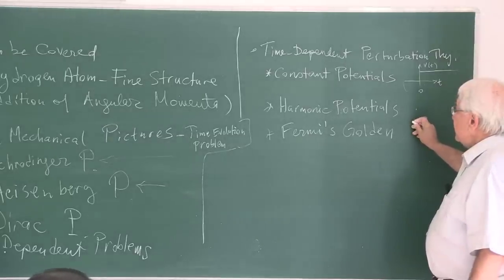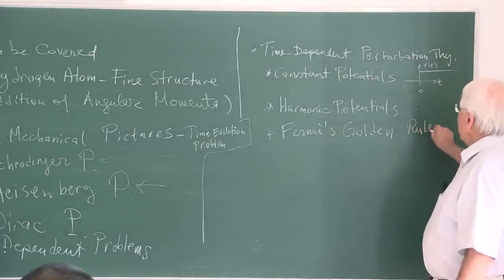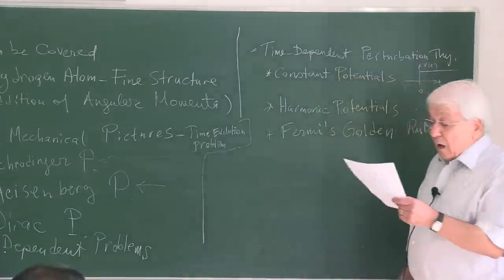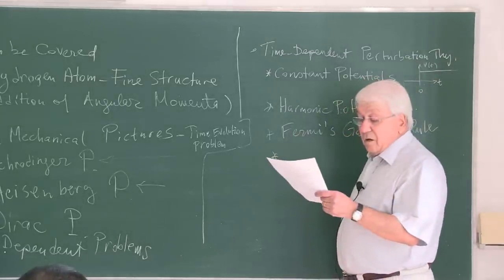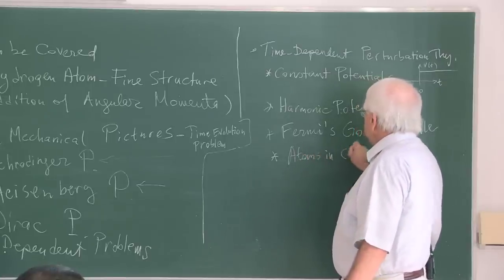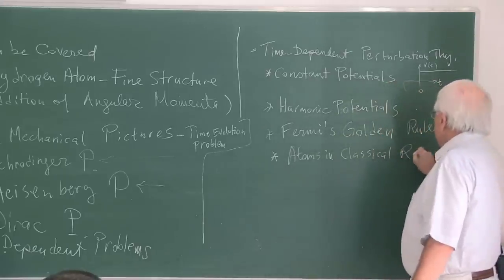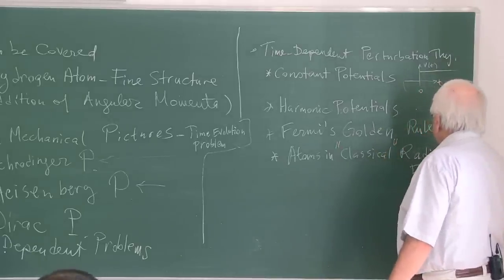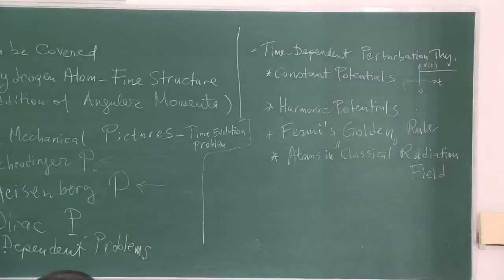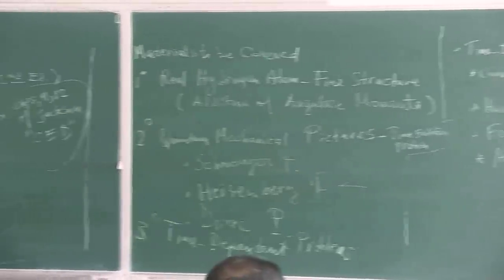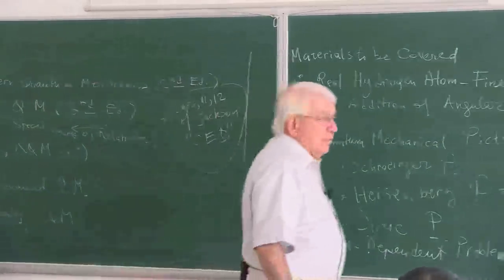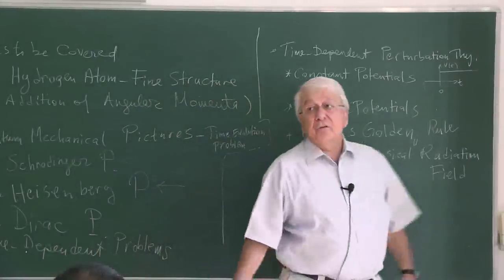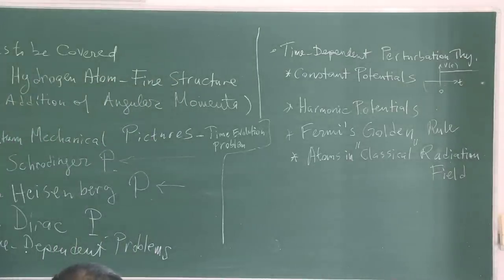After harmonic potentials, we are going to talk about Fermi's golden rule — I'm sure you'll appreciate this theorem. Through simple discussions Fermi's golden rule, one of several golden rules of Fermi, describes transition rates. Then we are going to use those formalisms to discuss in detail atoms in a classical radiation field. I will qualify this word 'classical' because it's important: in quantum mechanics the quantumness of the system is in the particle — here it is the electron in the atom.